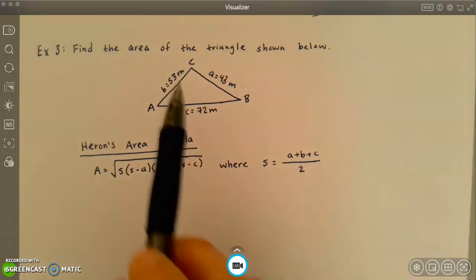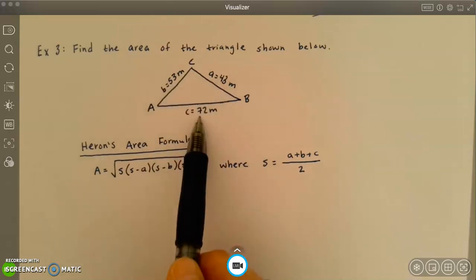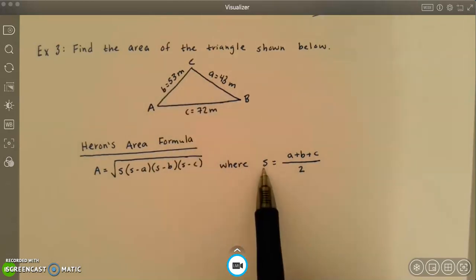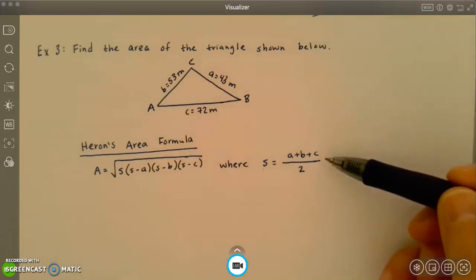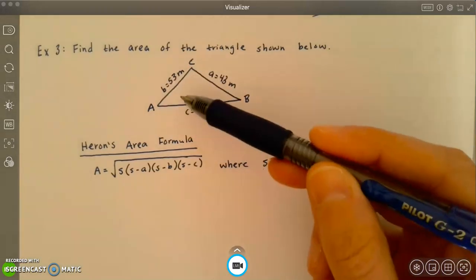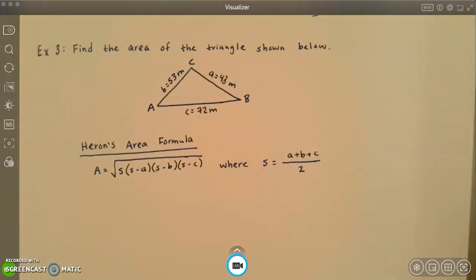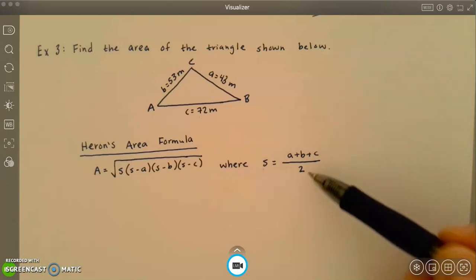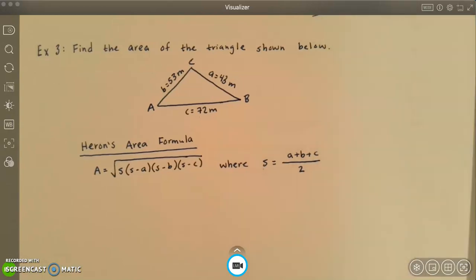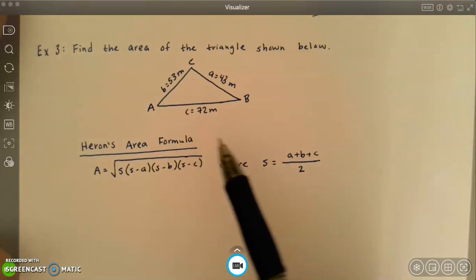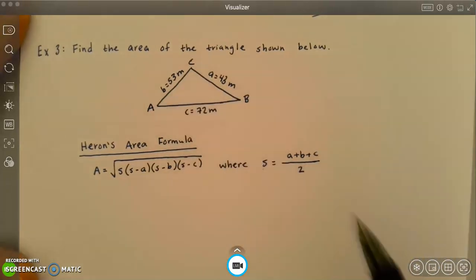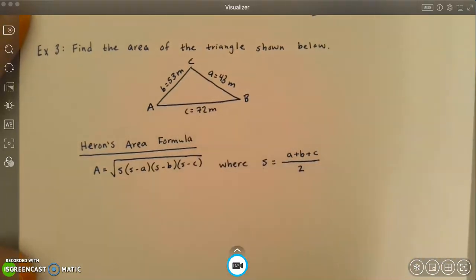a, b, and c are all sides. And then s, what s represents, is this other formula: a plus b plus c, so all three sides added and then divided by 2. So it's almost the average, because if it were the average we'd divide by 3, but we're dividing by 2. So let's go ahead and use the formula and the information given to find the area of this triangle.